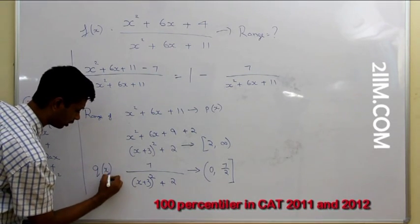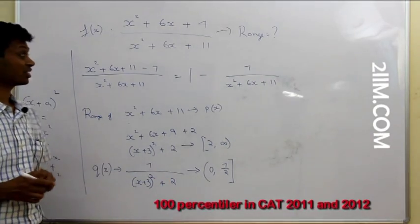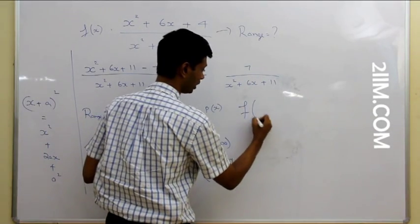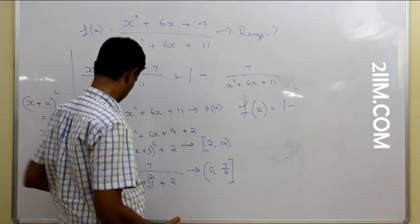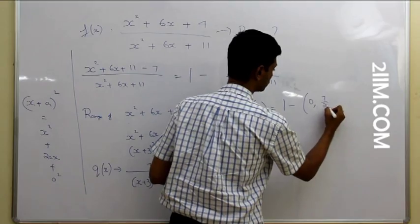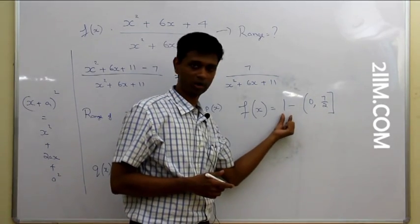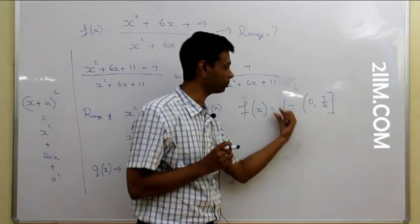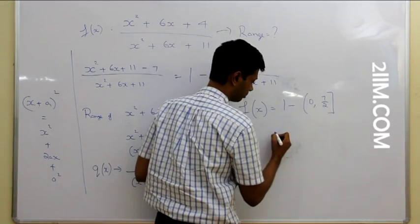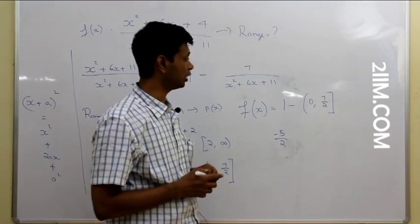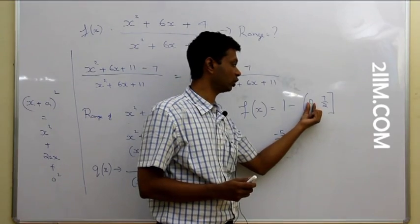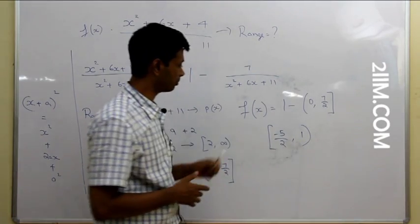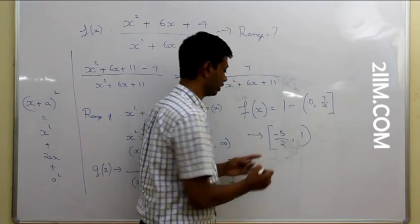I still haven't come to f(x). f(x) is 1 minus q(x), where q(x) ranges from 0 to 7/2. I'm subtracting q(x) from 1, so the smallest possible value of f(x) occurs when I subtract the largest possible q(x): 1 − 7/2 = −5/2. The largest possible value occurs when I subtract the minimum, which is 0: 1 − 0 = 1. Now, −5/2 is included (since 7/2 is achieved), but 1 is not included (since 0 is not achieved). So f(x) goes from −5/2 to 1.